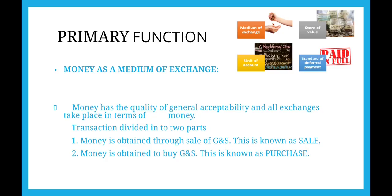Now let us see the primary functions of money. Money as a medium of exchange — all exchanges take place in the form of money, so money acts as an intermediary in sales and purchase. A buyer can buy goods through money and a seller can sell goods for money, so money acts as an intermediary between sales and purchase.